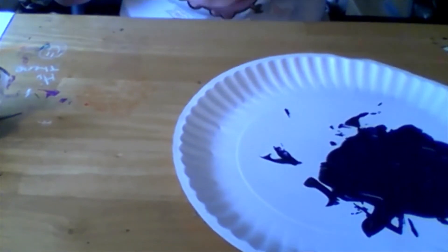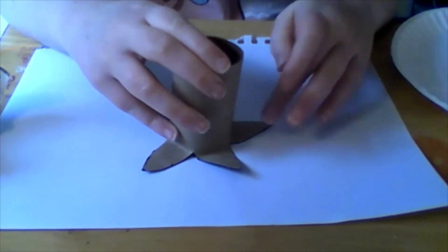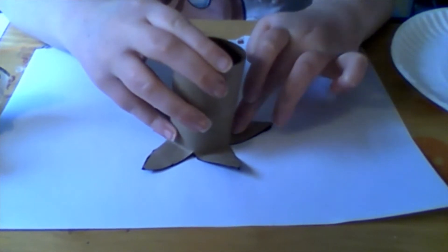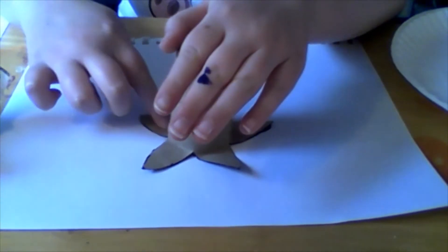Then you want to take your white piece of paper and put the flower directly on it. You can press it so more of the paint gets on it, which I'm doing as you can see.